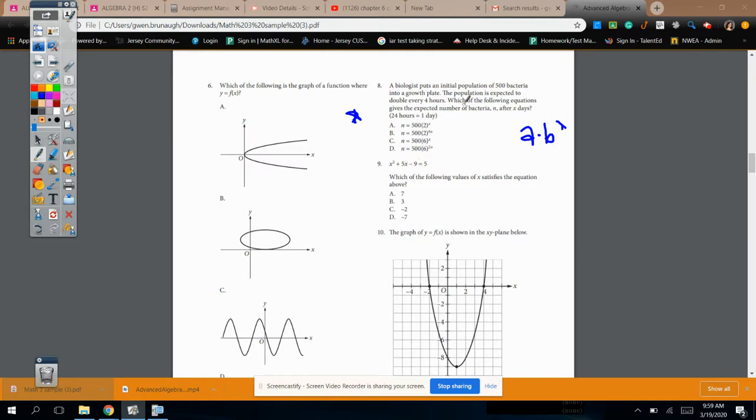And then, if it doubles, it's multiplying by 2 each time. So this takes out C and D. So we're going to take 500 times 2. Is it going to be to the x? Because that would be the A times B to the x form. Or where's the 6 even coming from? Well, they want to know about days, and it is doubling every 4 hours. So I want you to think about that.